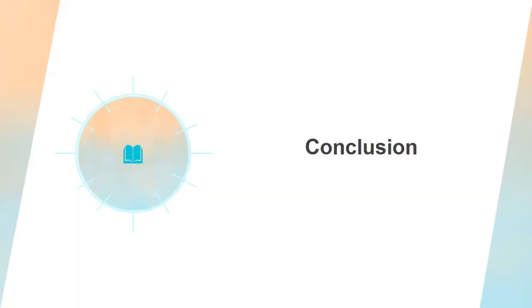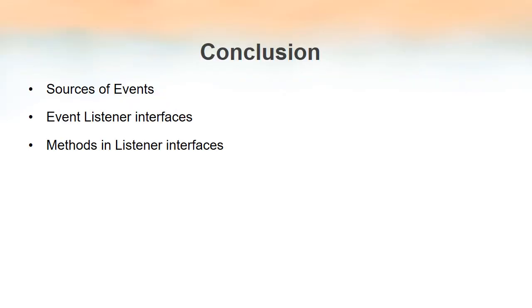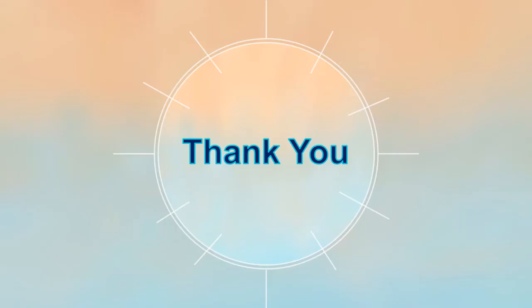To conclude, in this video lecture we discussed the different sources of events in Java, how events are generated, and how to register listeners with the source so that they will get notification of events. We also covered the different listener interfaces available in Java — ActionListener, ItemListener, KeyListener, MouseListener, and MouseMotionListener — and the methods defined in each of these listener interfaces. That is all for this video lecture, thank you.